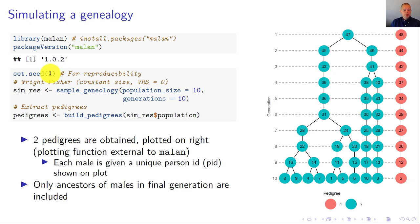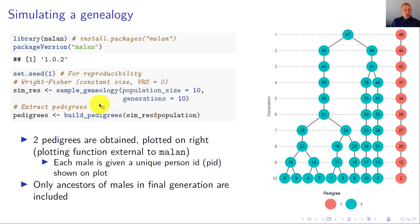The first thing to do is simulate a genealogy. Here I simulate one with a constant population size of 10 in all 10 generations and save the object as sim_res. This object contains several slots, one of which is the actual population, accessed with dollar-sign 'population', which I use to extract the pedigrees. In this specific simulation, I get two pedigrees, shown on the right-hand side — the plotting functionality is external to Malan.